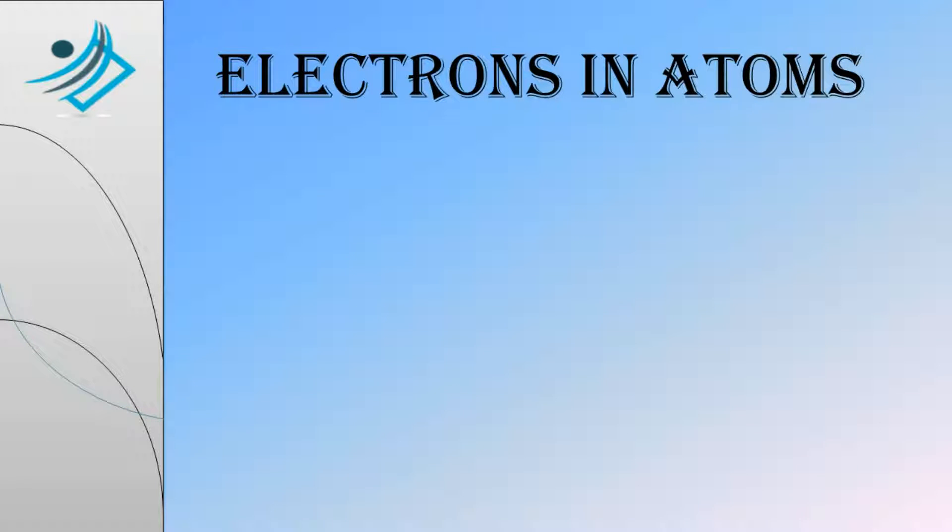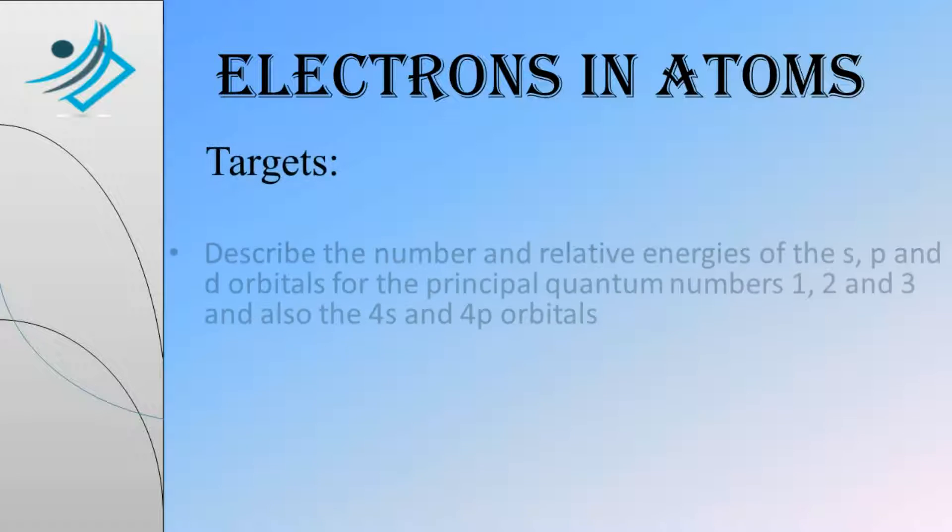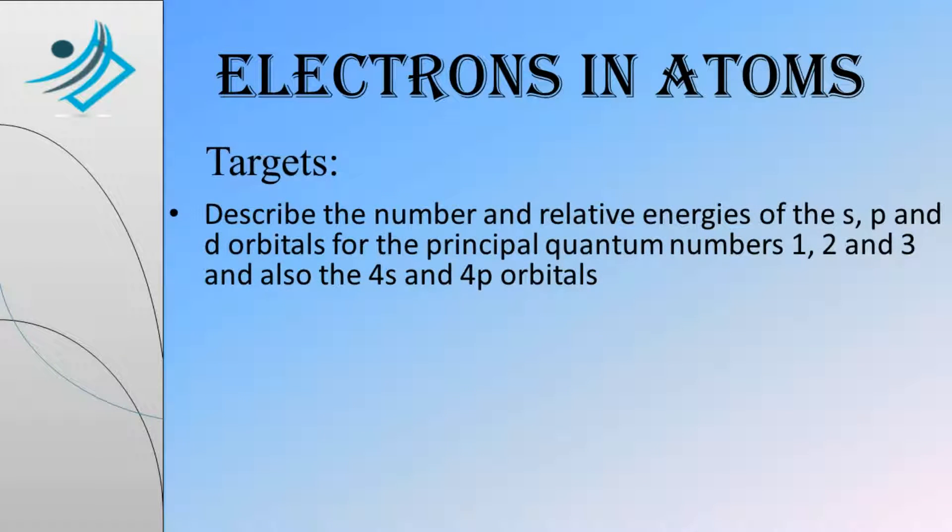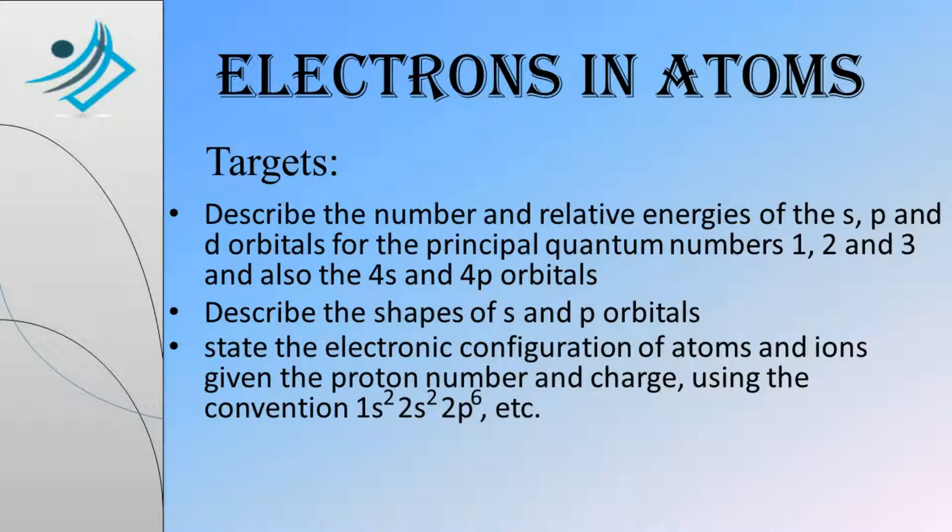Electrons and Atoms. The targets of this chapter are: describe the number and relative energies of the S, P, and D orbitals for the principal quantum numbers 1, 2, and 3, and also the 4S and 4P orbitals. Describe the shapes of S and P orbitals. State the electronic configuration of atoms and ions given the proton number and charge using the convention 1S, 2S, 2P, etc.